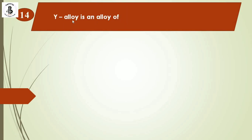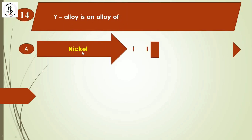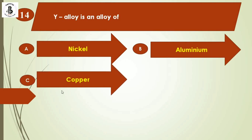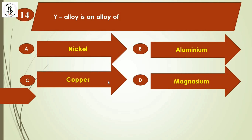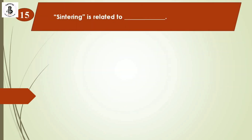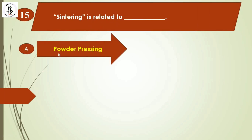Next question: Y-alloy is an alloy of — option A: nickel; option B: aluminium; option C: copper; option D: magnesium. Y-alloy is a category of aluminium alloy. The right answer is option B, aluminium.